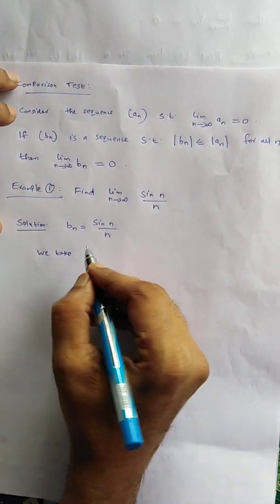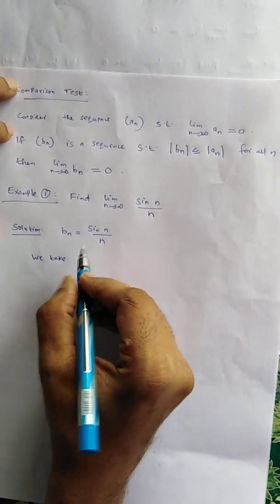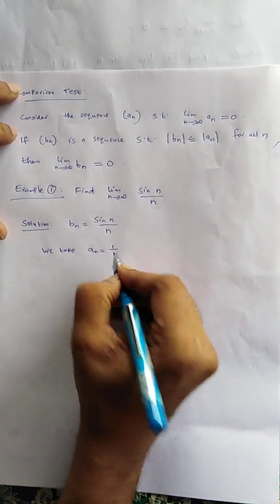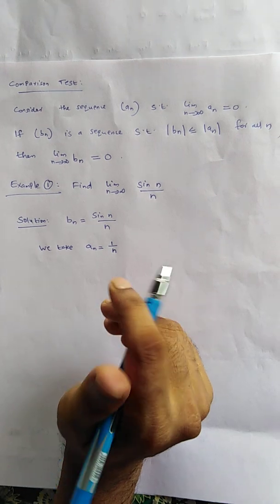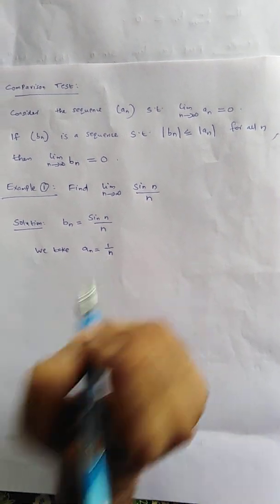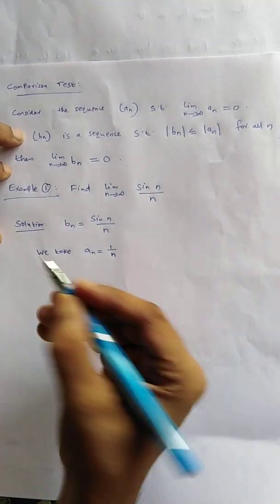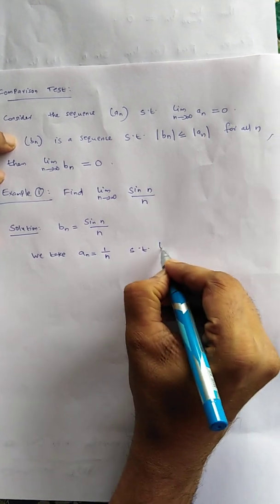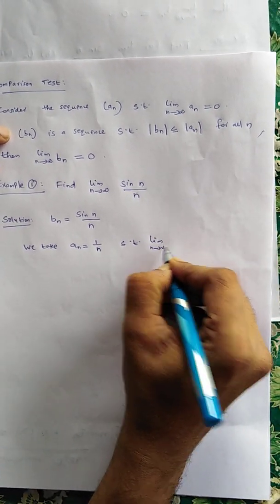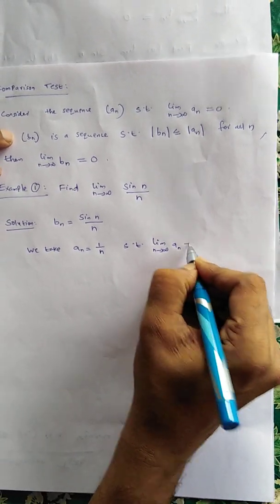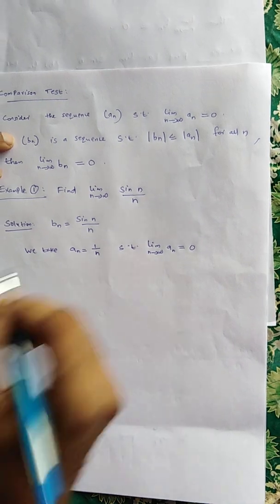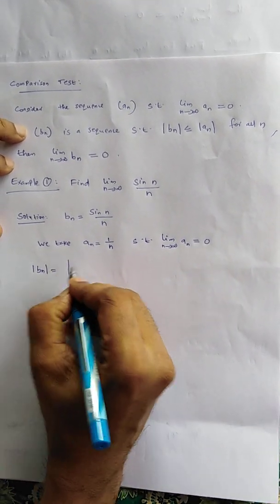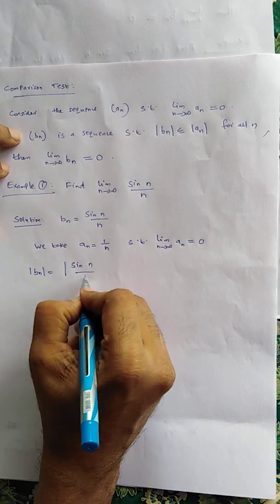We take a_n = 1/n — this choice is very important. We already know that lim(n→∞) a_n = 0. Moreover, |b_n|, that is |sin(n)/n|,